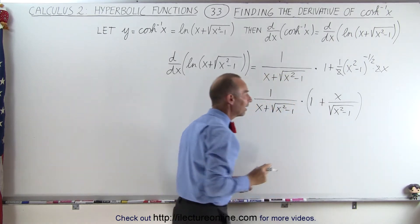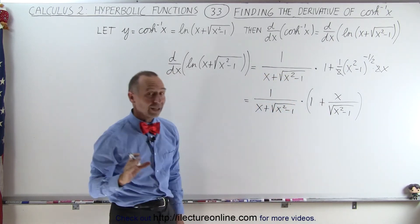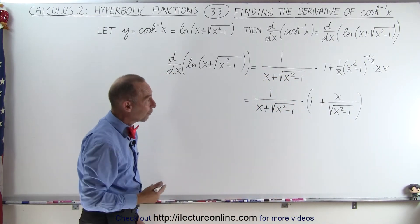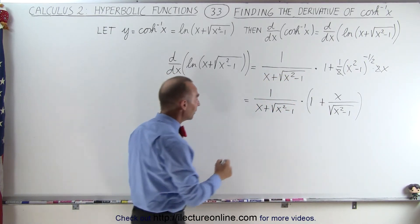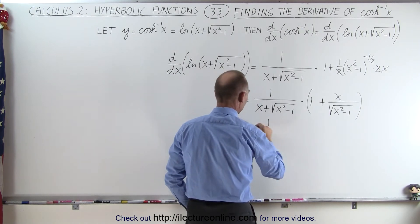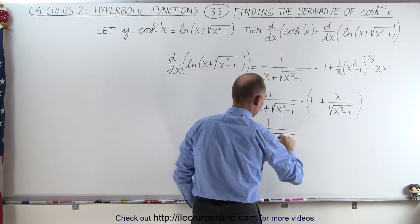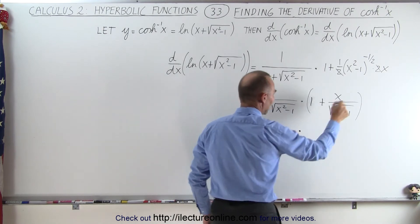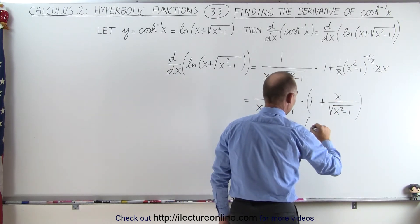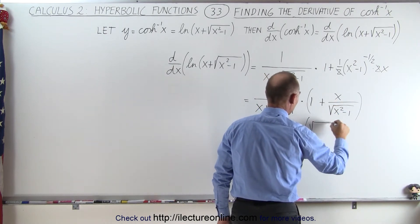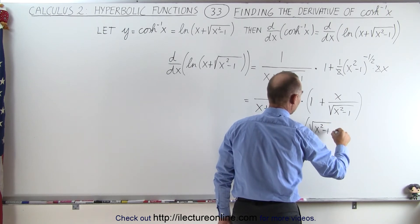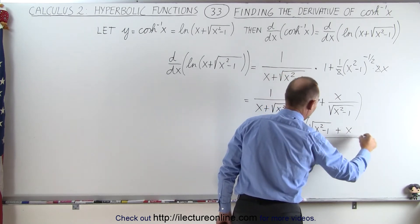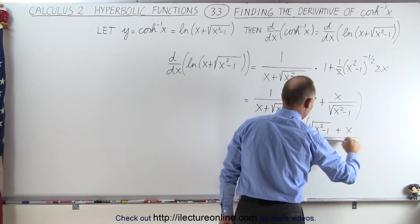Putting that inside parentheses, we write what's inside over a common denominator. This becomes 1 divided by x plus the square root of x squared minus 1, times the square root of x squared minus 1 plus x, divided by the square root of x squared minus 1.